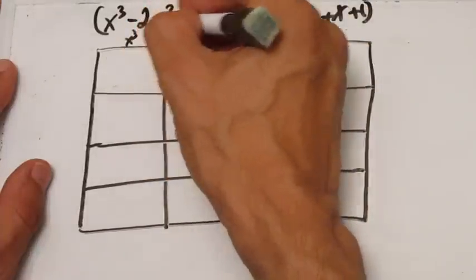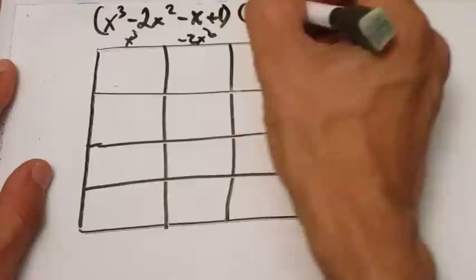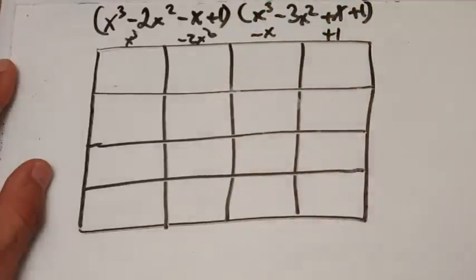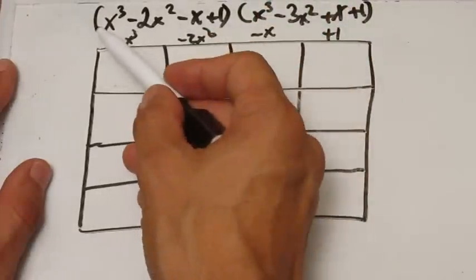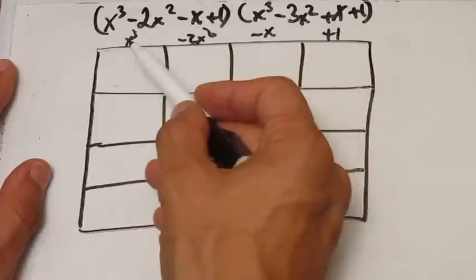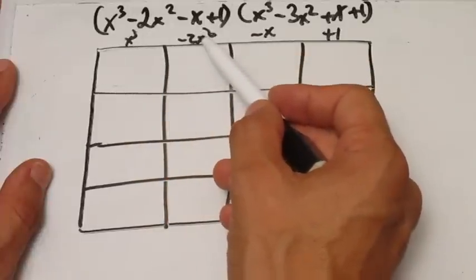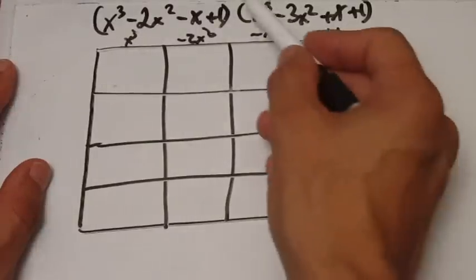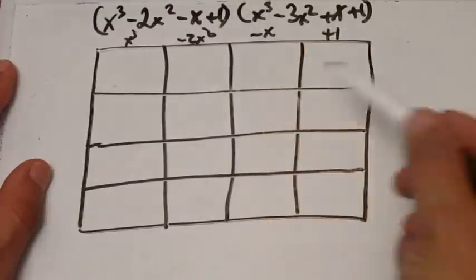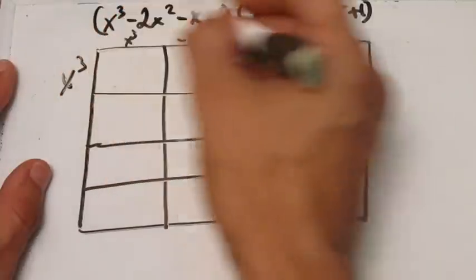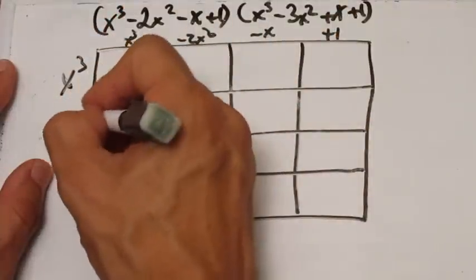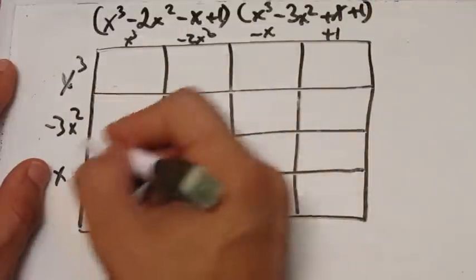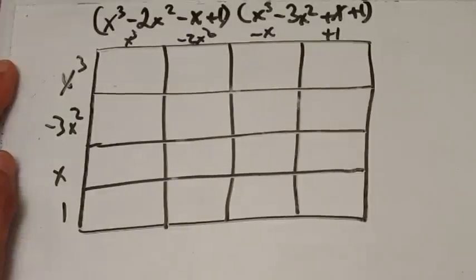You line up the terms along the top: x cubed, minus 2x squared, minus x, plus 1 — taken from the first polynomial. Then you put the second polynomial's terms going down: x cubed, negative 3x squared, x, and positive 1. Now you're just going to fill in all the boxes, and it doesn't matter what order you fill them in.